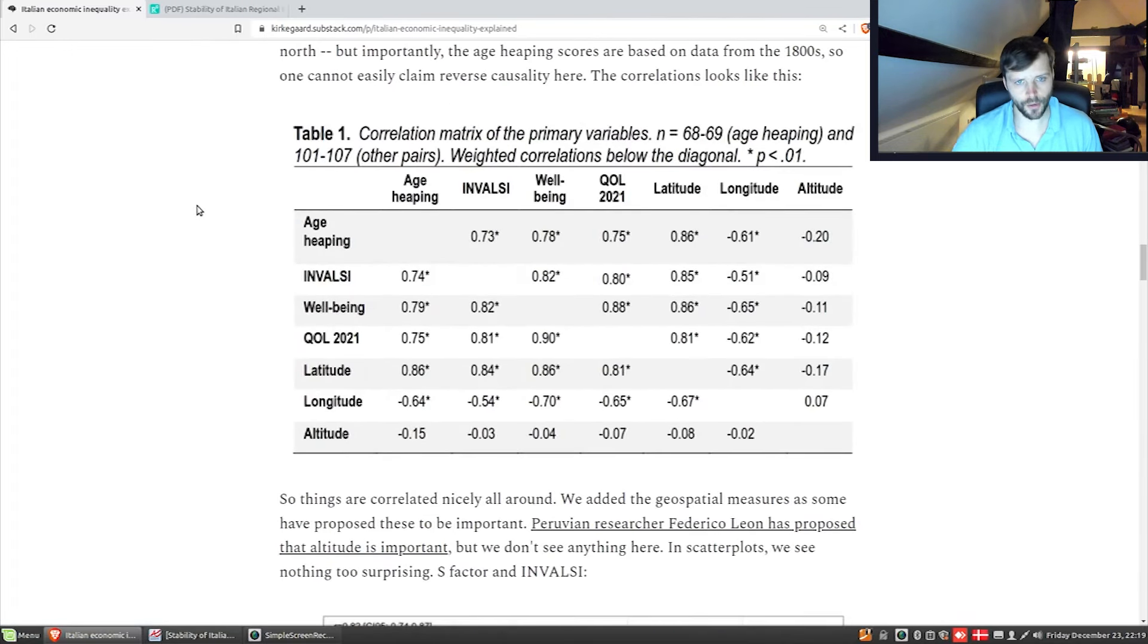Going forward, we can look at the correlation matrix, which looks like this. Below the diagonal is weighted by the population size, the current population size. We can see that age-heaping and INVALSI, the current scholastic tests, both of these are proxies for general intelligence. They correlated a very respectable 0.74, and that's kind of impressive considering it's roughly 150 years between these measurements. They also correlate roughly the same with the well-being index. These three measures really go well together over time.